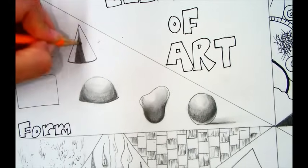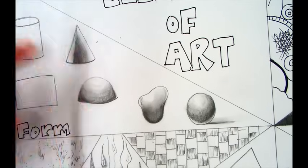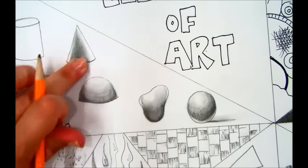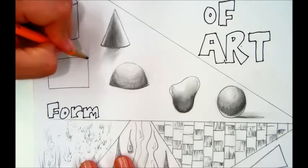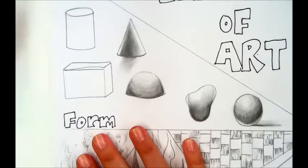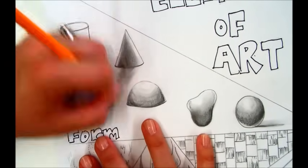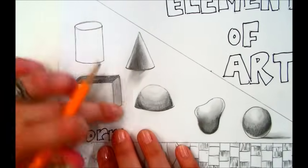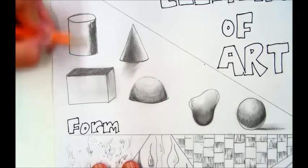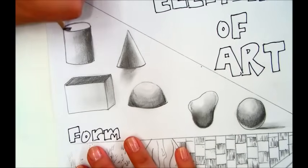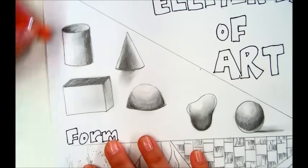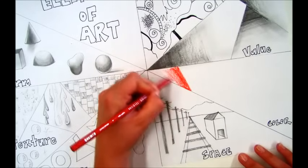Doing the same with this cone shape. Smudging it around with your finger, erasing some highlights, cleaning up your edges. Turn this rectangle into a cube by adding the sides and the top, and again, adding some more value. And lastly, we're going to create a cylinder, make it look more like a can.